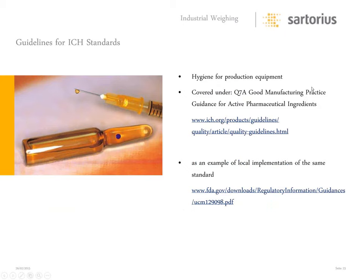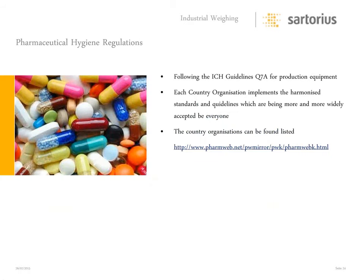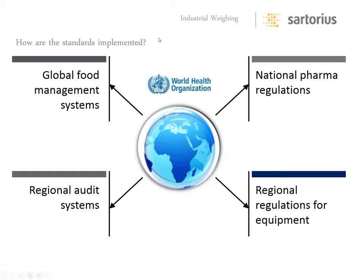Each country organization implements the harmonized standards and guidelines, which are being more and more widely accepted. How are these standards implemented? Through global food management systems, regional audit systems, national pharma regulation, and regional regulations for equipment — all of which comes back to the WHO, who started this whole process back in the 1960s.